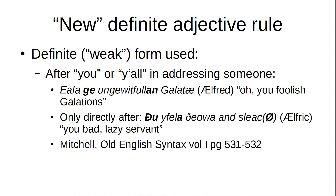The next place that the definite form is used is after 'you' or 'y'all' — in Old English, du and jä — when addressing someone. Here's an example from Alfred: Alla jä unjewitfullaingalatai — 'Oh, you foolish Galatians.' It's important to note that this applies only directly after. Another example from Alfred: Thu uvela theowa on Slack. You'll notice that uvela has the definite ending, but Slack doesn't have the ending because it is removed from the thu. For more information, you can go to Old English Syntax by Mitchell.